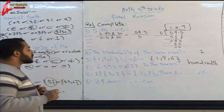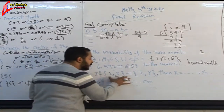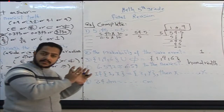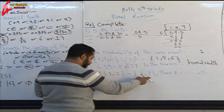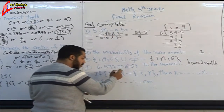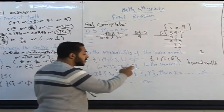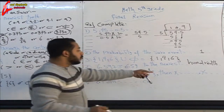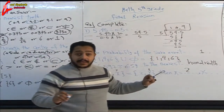Question five complete: if the set {1, x} equals the set {2, y}, find x and y. When two sets are equal, every element in one set must be in the other. The element 2 is in the second set but not the first, so x equals 2. The element 1 is in the first set but not the second, so y equals 1.